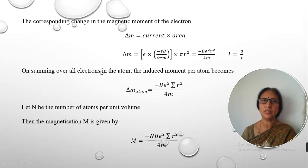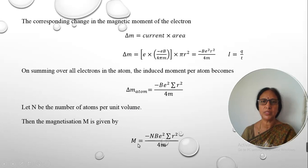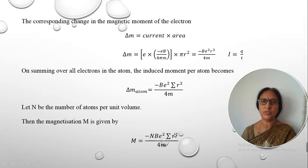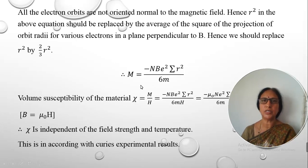To calculate the magnetic moment of the entire atom — which consists of many electrons not all in the same orbit — the magnetic moment is written with a summation sign over r², indicating that not all electrons are in the same orbit. If the specimen contains N atoms per unit volume, the net magnetization is M = −NBe²Σr²/4m. Taking into account that not all orbits are normal to the magnetic field direction, Σr² is replaced by (2/3)r², and the magnetization expression reduces accordingly.